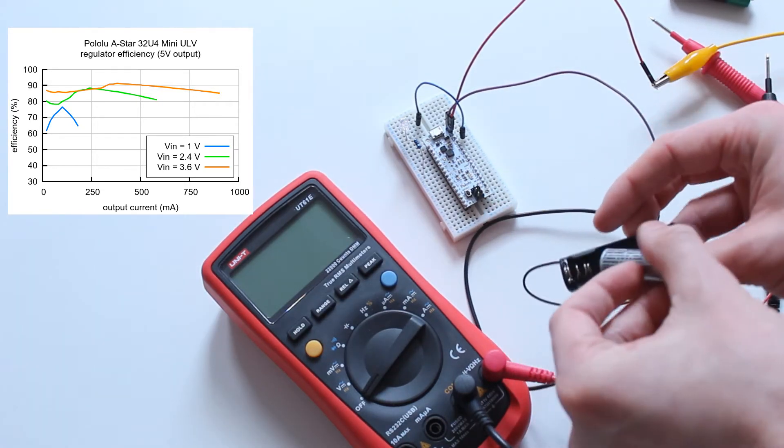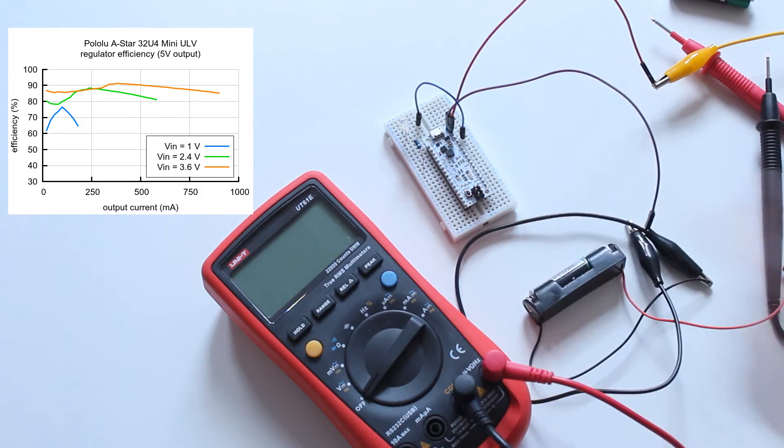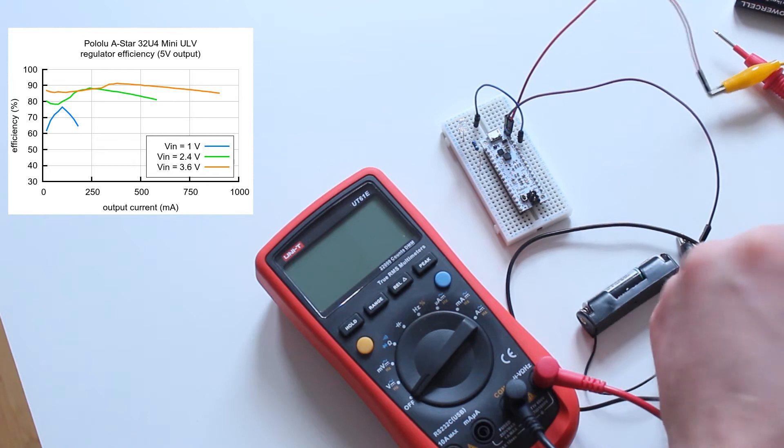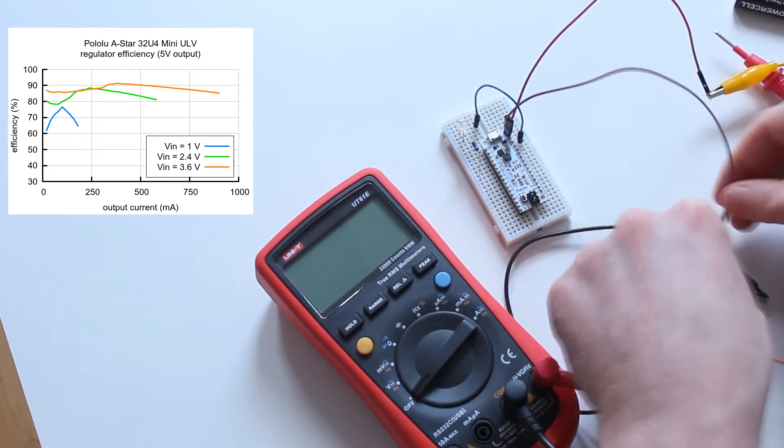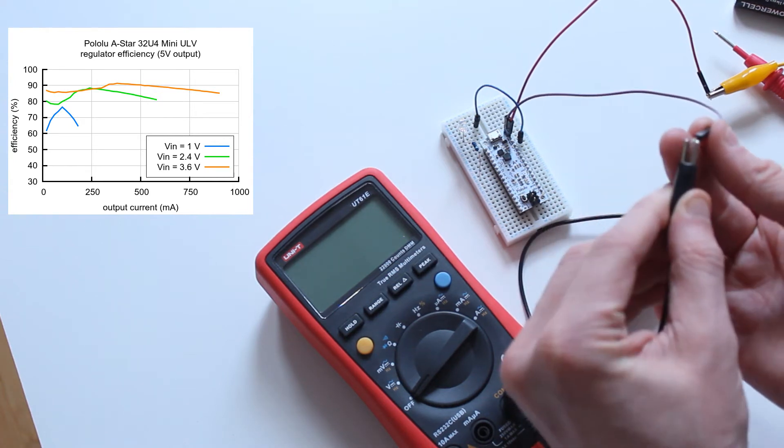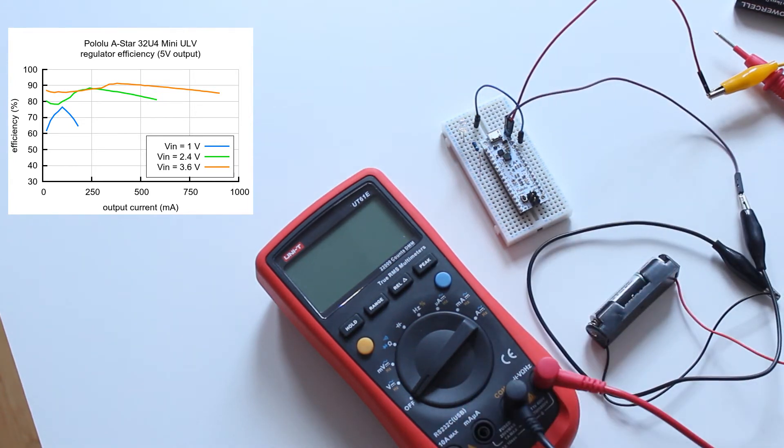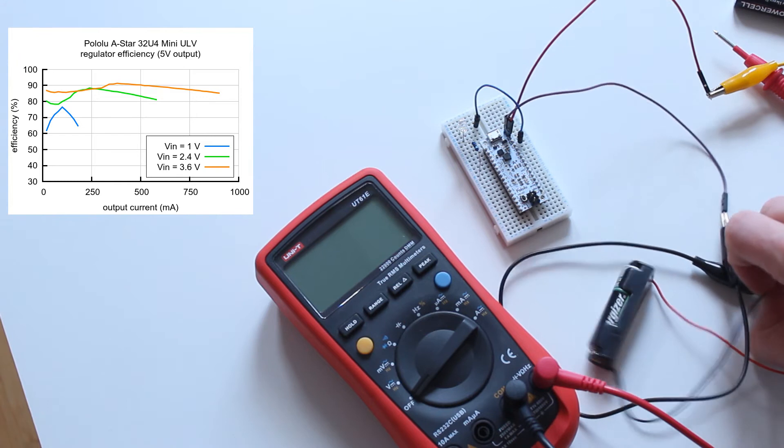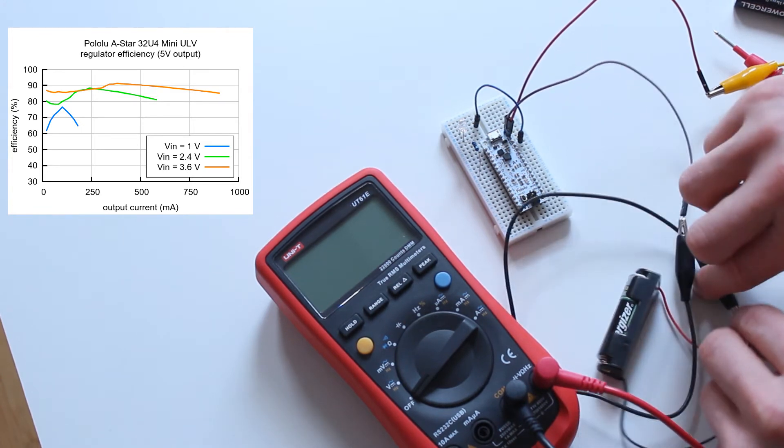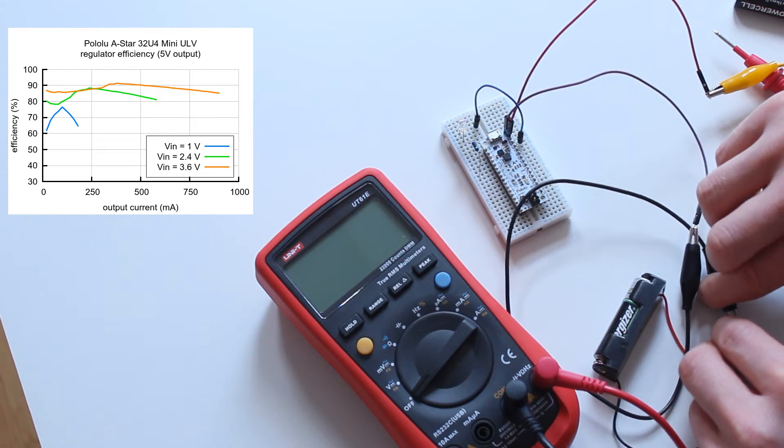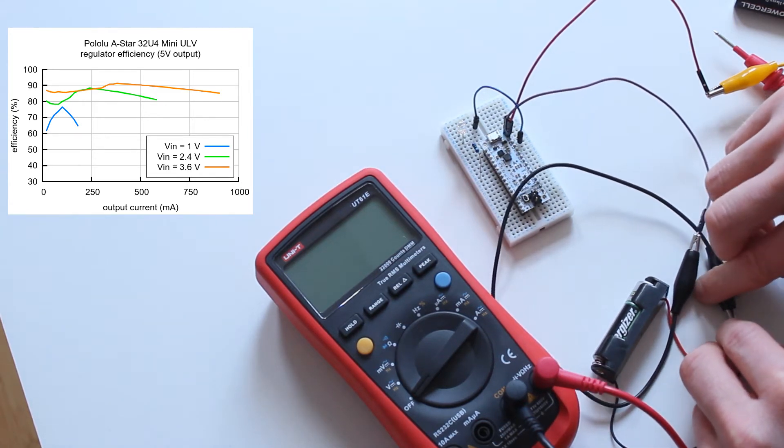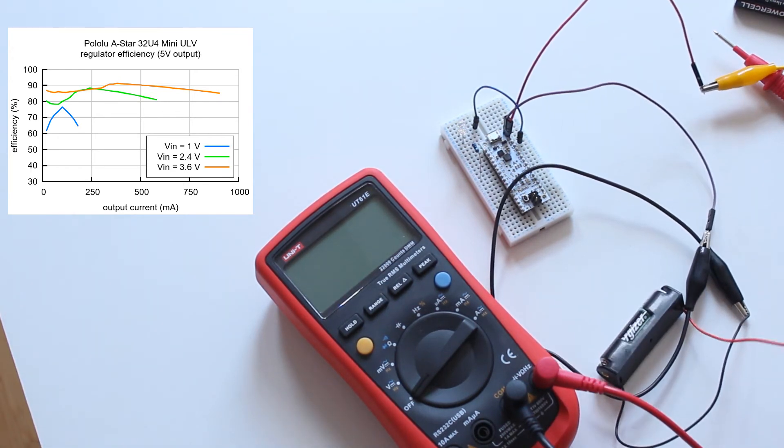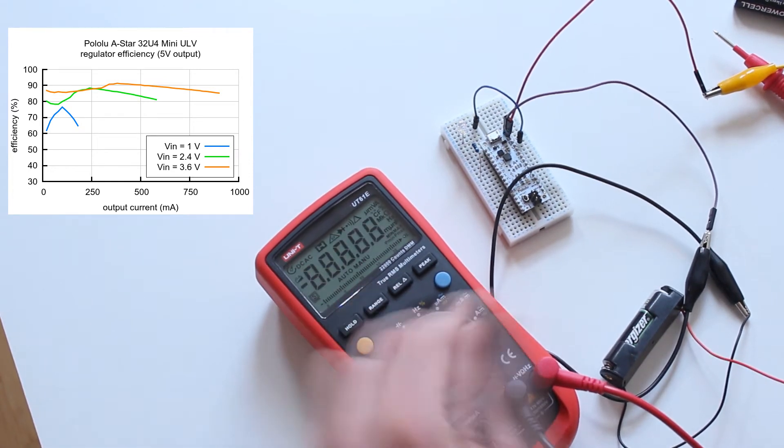Right so this one is a rechargeable battery so it's going to have an even lower voltage than the 1.5. Well that isn't working at all. It does not want to turn on. They're definitely all connected but it doesn't like that voltage. Let's test that out with a multimeter and see what's going on.